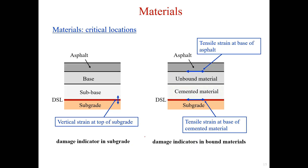For the materials, we have to check the damage indicators at the critical locations. In other words, the vertical strain at the top of the subgrade, the tensile strain at the base of the asphalt, and tensile strain at the base of cemented materials.